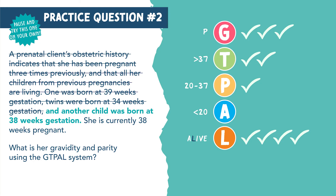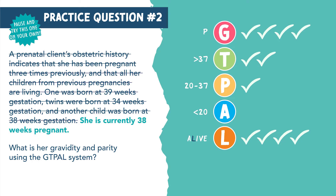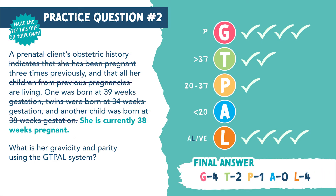The next statement says she is currently 38 weeks pregnant. So we count this one towards her gravidity — another tally next to G. But don't let this question trick you: we don't count this towards term or living children because she hasn't delivered the baby yet. Making our final answer G4, T2, P1, A0, L4.